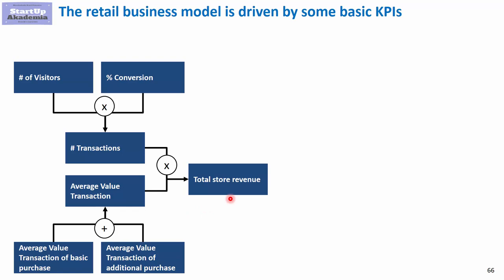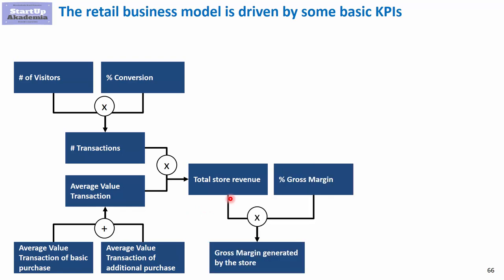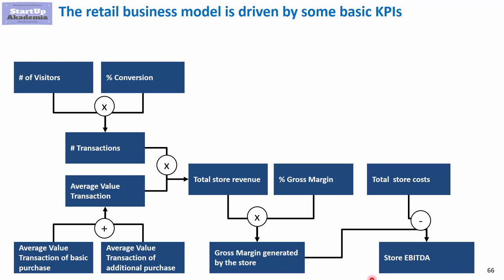On the cost side, we have the cost of products, so we can look at the gross margin — that is revenue minus the cost of goods sold. In percentage terms, this is the gross margin percentage, and when we multiply it by store revenue we get the gross margin generated by the store. To get to EBITDA, we also deduct the cost of the store itself, and that gives us the EBITDA.